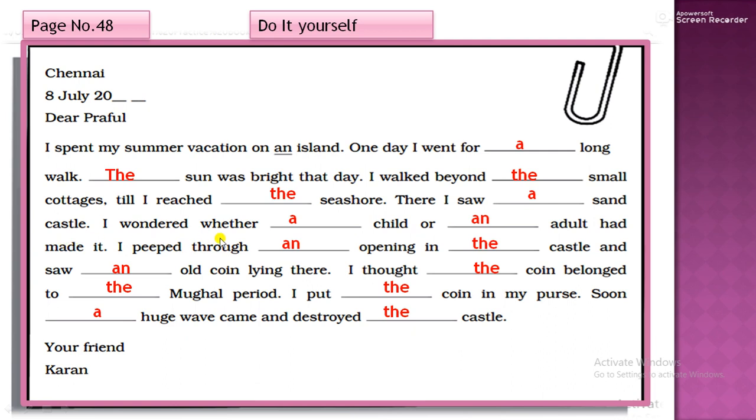There I saw a sand castle. I wondered whether a child or an adult. So whether a child. When consonant is there, we use article A. And when vowel is there, we use article N. Had made it. I peeped through an opening. Opening. O, I, E, A, E, I, O, U. Very simple it is. In the castle, I saw an old coin.